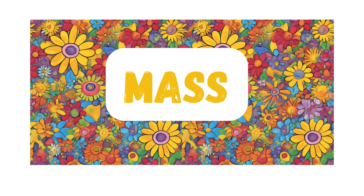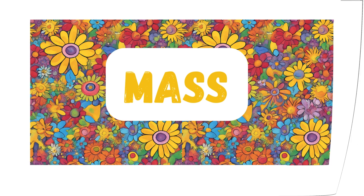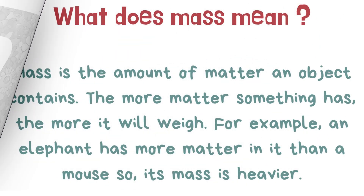Mass. What does mass mean? Mass is the amount of matter an object contains. The more matter something has, the more it will weigh. For example, an elephant has more matter in it than a mouse, so its mass is heavier.